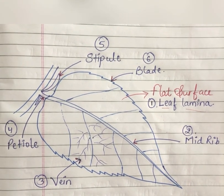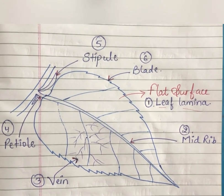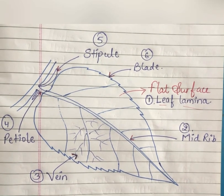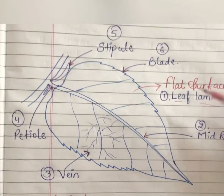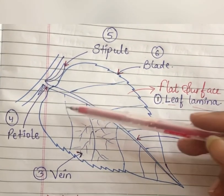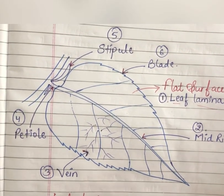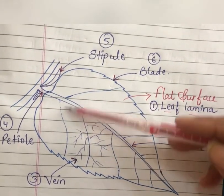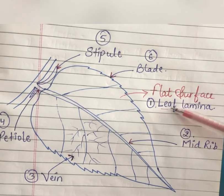Hey, hello everyone, welcome back to Fun with Science. Today we will discuss the parts of a leaf. If you look here, you will see a picture of a leaf. The first part is this green flat surface of the leaf — we call it the leaf lamina.